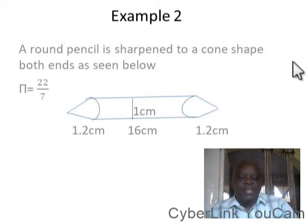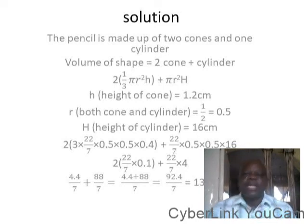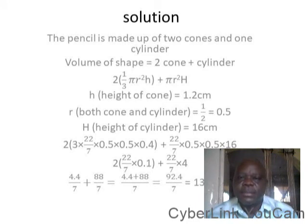Now let's look at the solution. The pencil is made up of two cones and one cylinder. Volume of shape equals two cones plus cylinder, that is two conical shapes plus one cylindrical shape. The formula for volume is 1/3 π r²h, then you multiply it by 2 because there are two of those at both ends, plus π r²H.